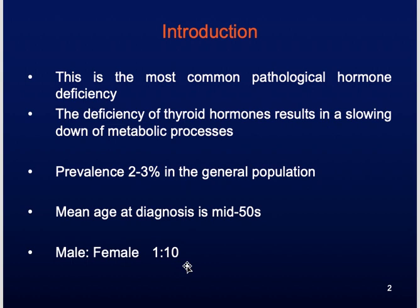Many patients have what is called subclinical hypothyroidism. Subclinical means that when you examine the patient, you cannot appreciate any clinical features of the condition. But in reality, when you check their TSH levels, you find it is elevated — meaning thyroid hormone levels are low, so the pituitary is producing more and more TSH. Because there are no clinical signs or symptoms, we call it subclinical hypothyroidism.